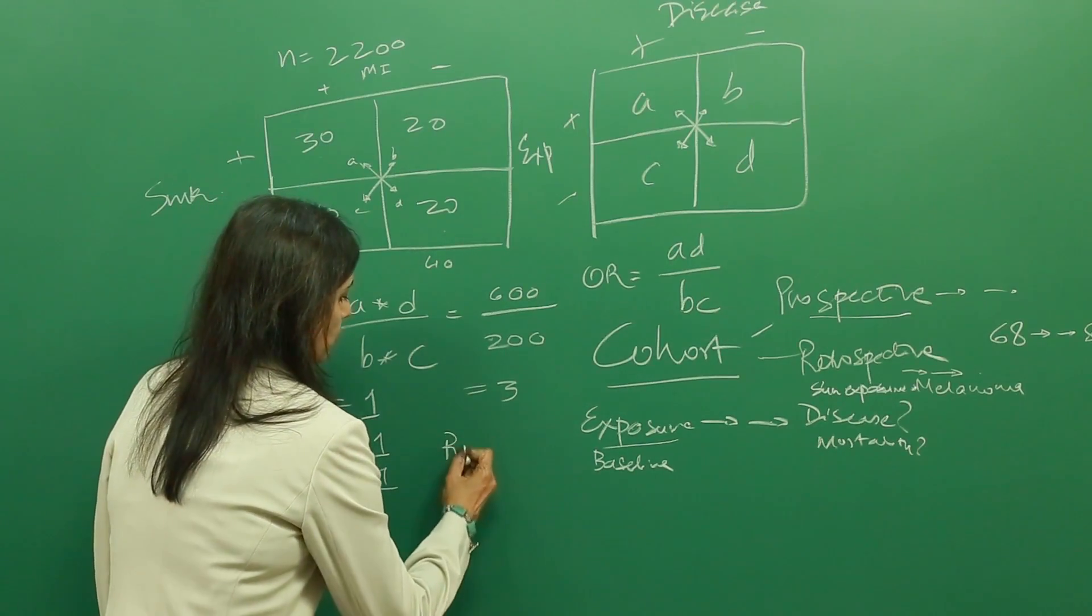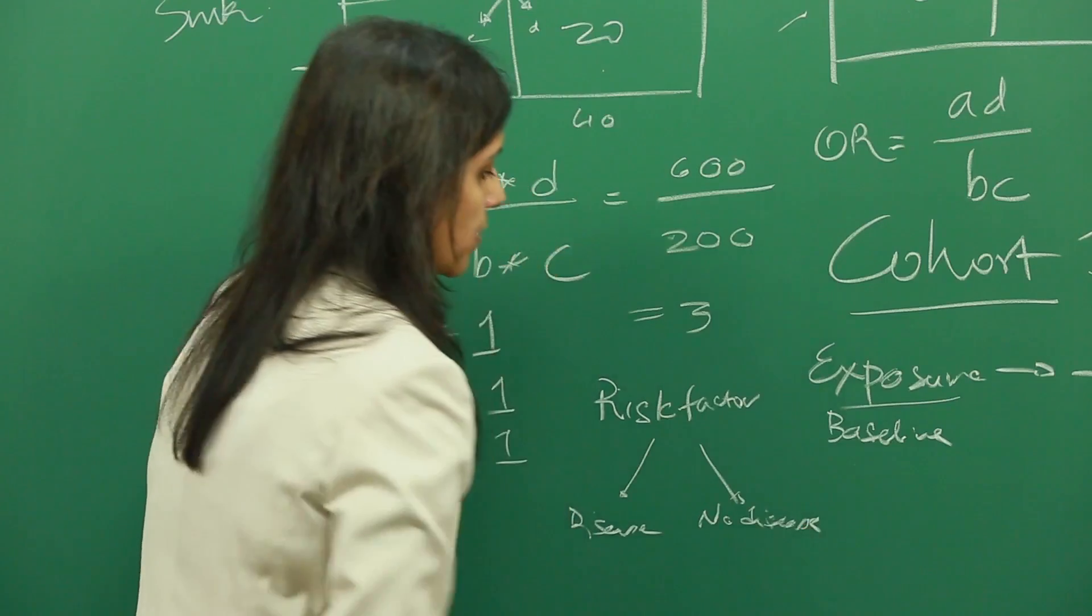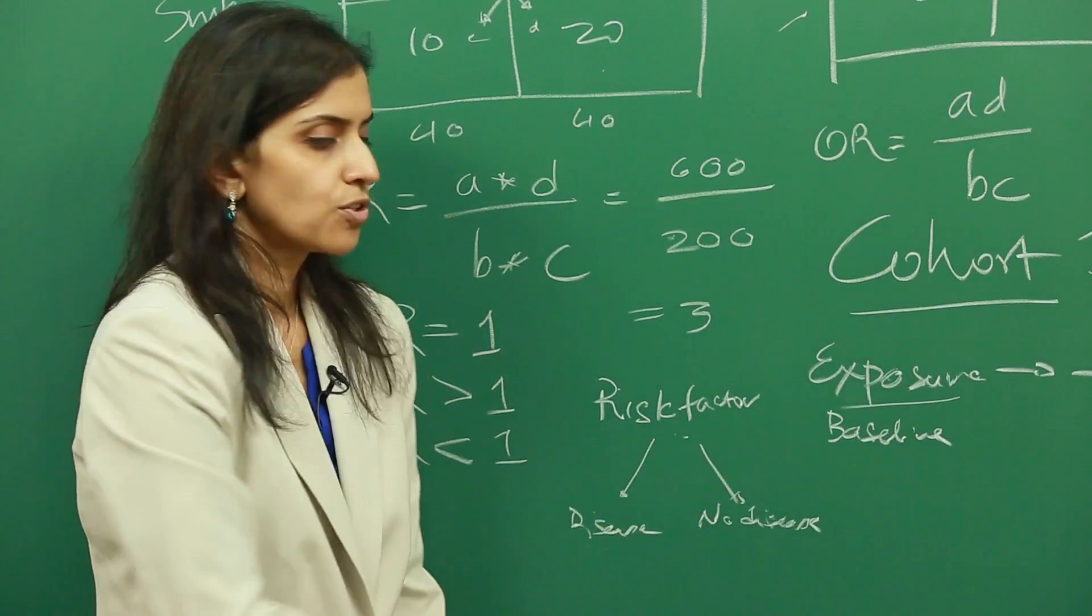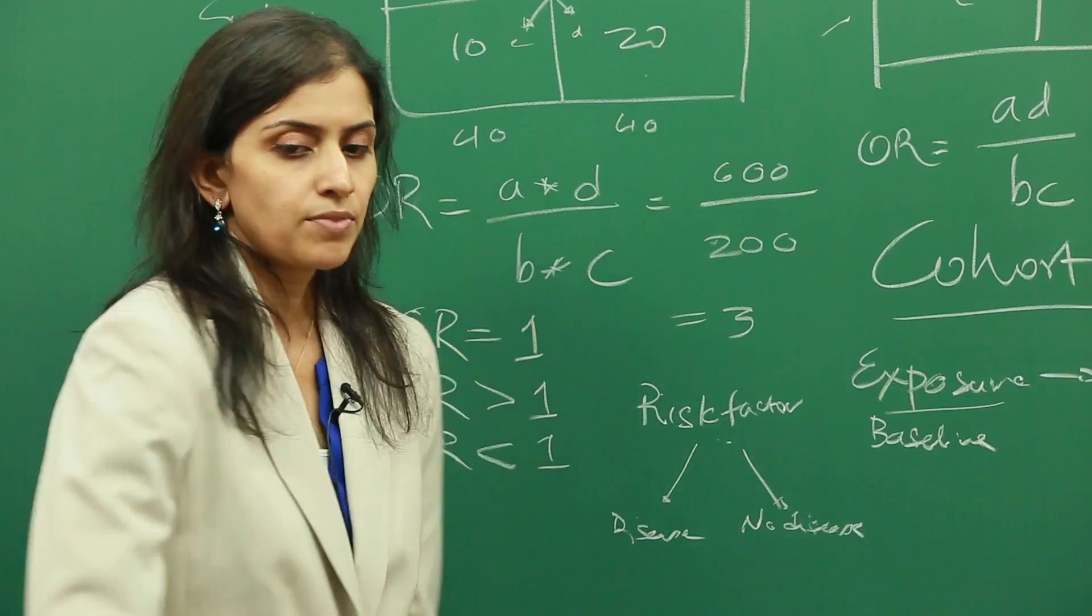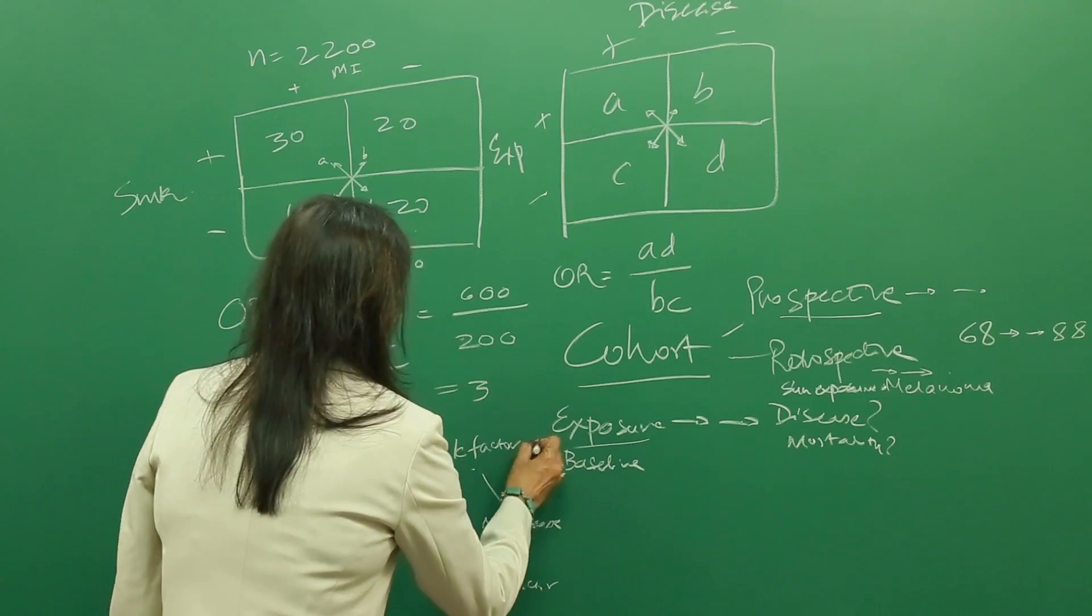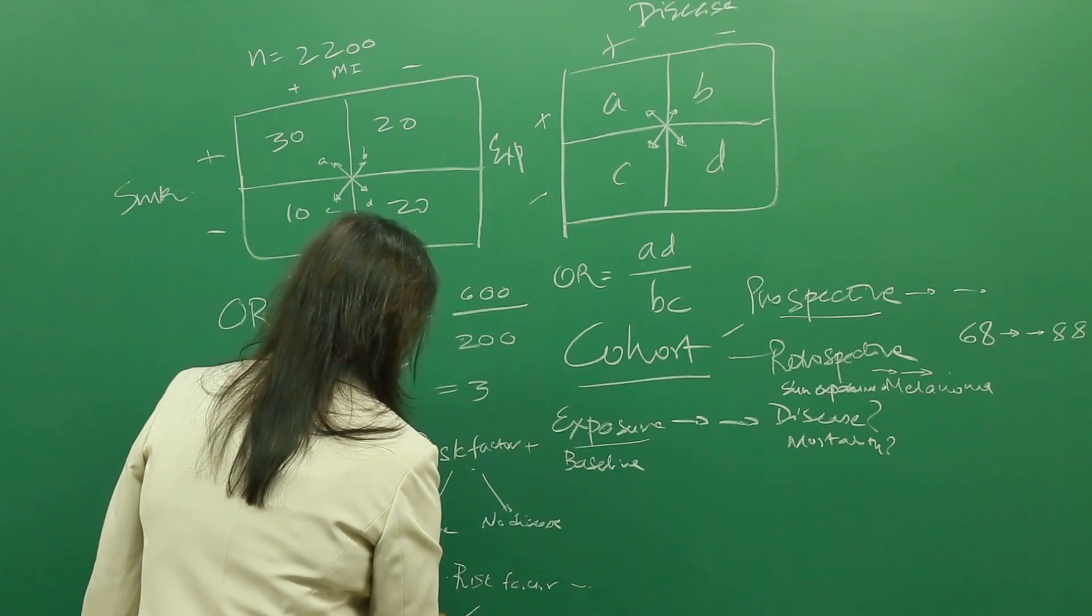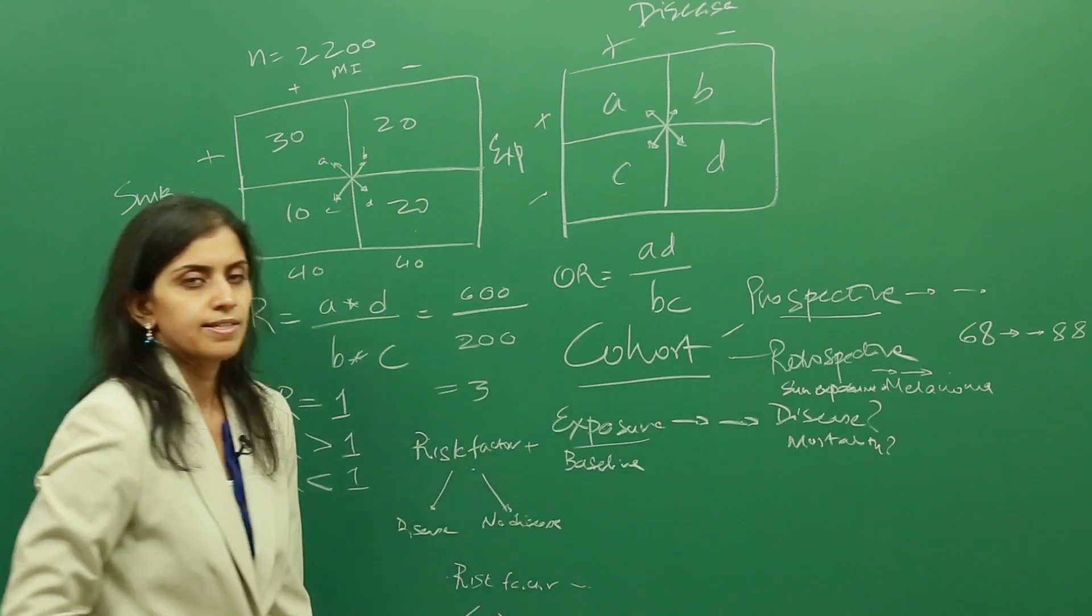If you want to set it up or write it out, we can write it out as the exposure or the risk factor that leads us to disease or no disease. And then we can compare it to, so this is presence, this is going to be absence. Again, disease and no disease.